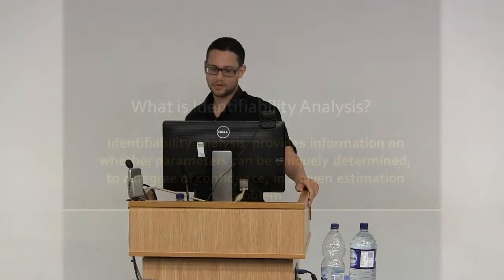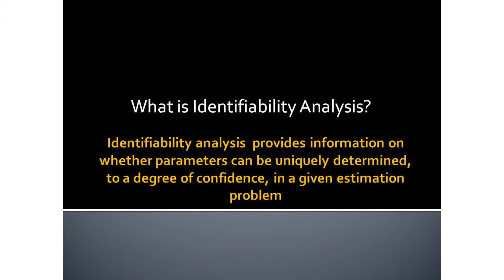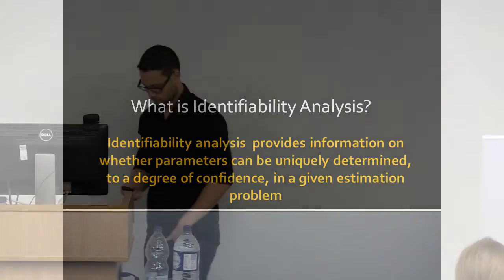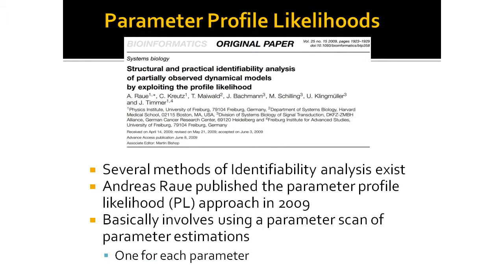So what is identifiability analysis? Identifiability analysis provides information on whether parameters can be uniquely determined to a degree of confidence in a given estimation problem. Several methods of identifiability analysis exist. The one I'll talk about today was published by Andrews and Rao in 2009. It's called the parameter profile likelihood approach. Basically, you're doing a parameter scan of parameter estimations and you do that for each parameter.